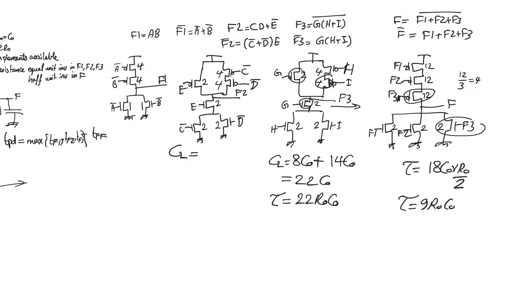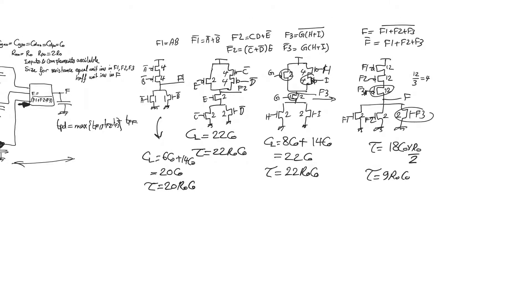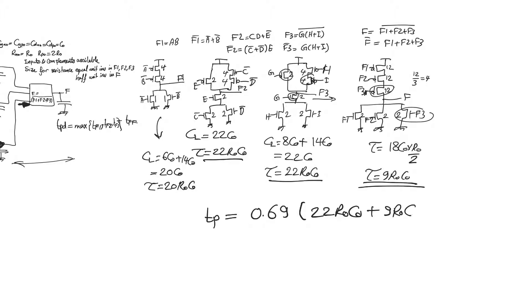For gate f2, including the capacitance loading from gate f, the total loading is also 22 c-naught, for a time constant of 22 r-naught c-naught. For gate f1, the internal capacitance is 6 c-naught and the output capacitance is 14 c-naught, giving a total loading of 20 c-naught and a time constant of 20 r-naught c-naught. The total delay is 0.69 times the maximum time constant of 22 r-naught c-naught plus 9 r-naught c-naught.